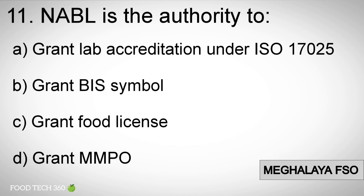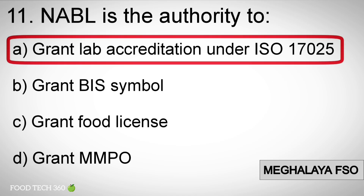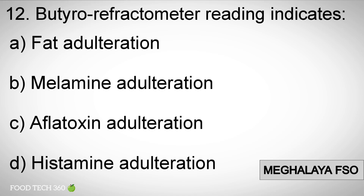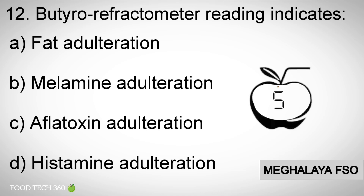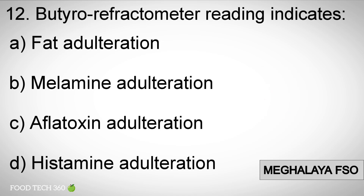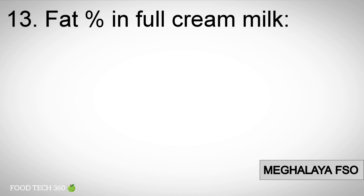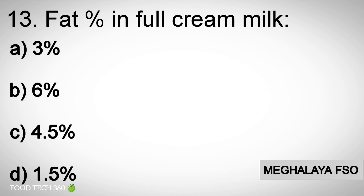Correct answer: A) grant lab accreditation under ISO 17025. Question number 12: Butyrometer refractometer reading indicates — options: A) fat adulteration, B) melamine adulteration, C) aflatoxin adulteration, D) histamine adulteration. Correct answer: A) fat adulteration.